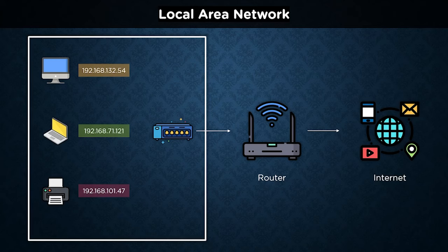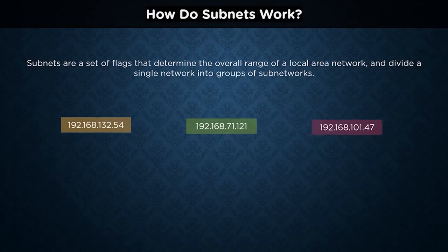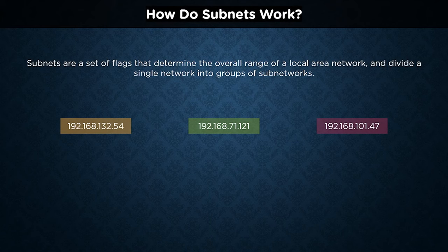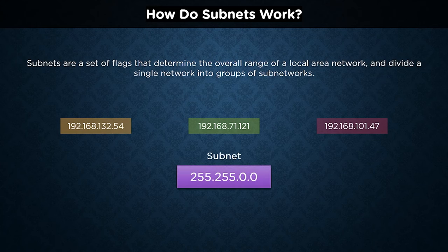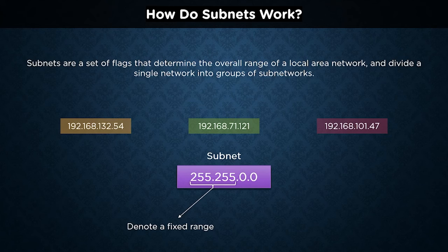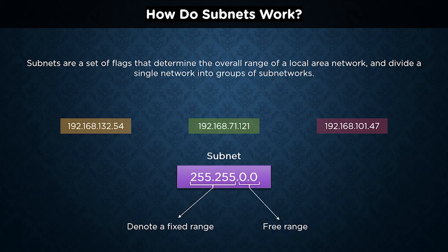Specific IP addresses exist for each device in a network, whether local or wide area. All these IP addresses must belong to a particular range known as the subnet or subnetwork, which helps determine the overall range of a local area network. For example, the IP addresses on screen belong to a subnet of 255.255.0.0. The first two flags denote fixed values present in every IP address — in this case, 192.168 is the consistent factor. If a device's IP address starts with 192.168, it is most likely in the same local area network. The last two sections are free ranges, meaning they can be any number less than 255, further helping the router and switch differentiate between multiple IP addresses.